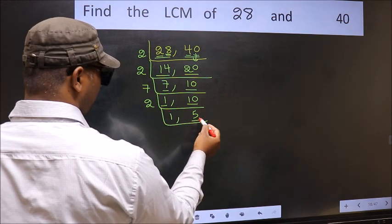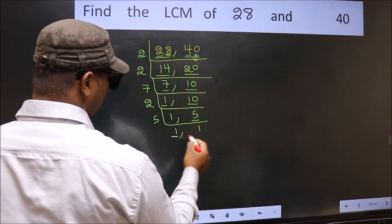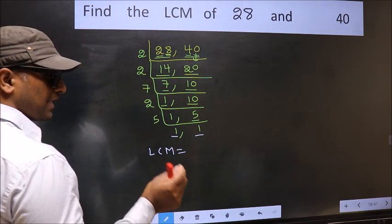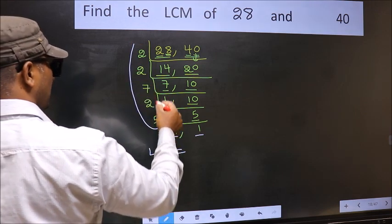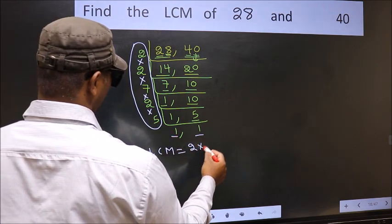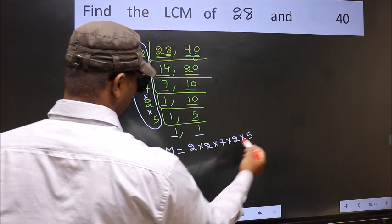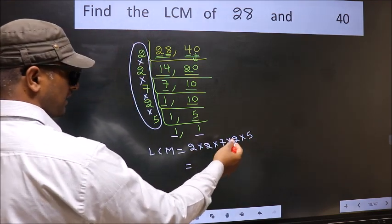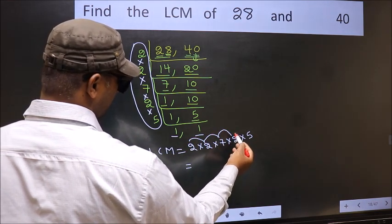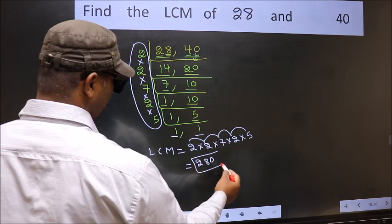Now we have 5. Since 5 is a prime number, 5 times 1 is 5, so 5 divided by 5 gives 1. We got 1 in both places, so the LCM is the product of these divisors: 2 times 2 times 7 times 2 times 5. Multiplying: 2 times 2 is 4, times 7 is 28, times 2 is 56, times 5 is 280. So 280 is our LCM.